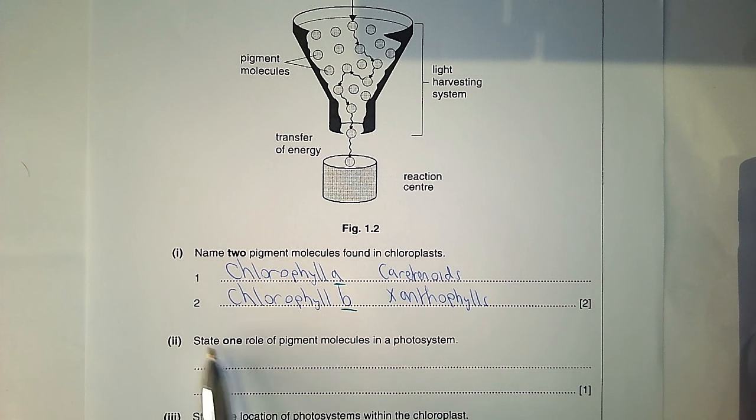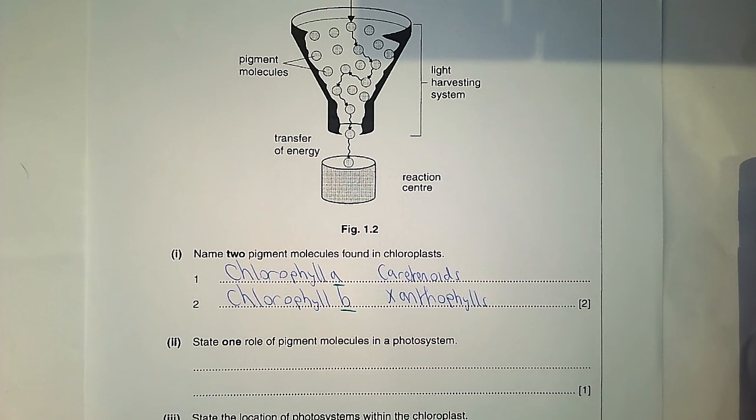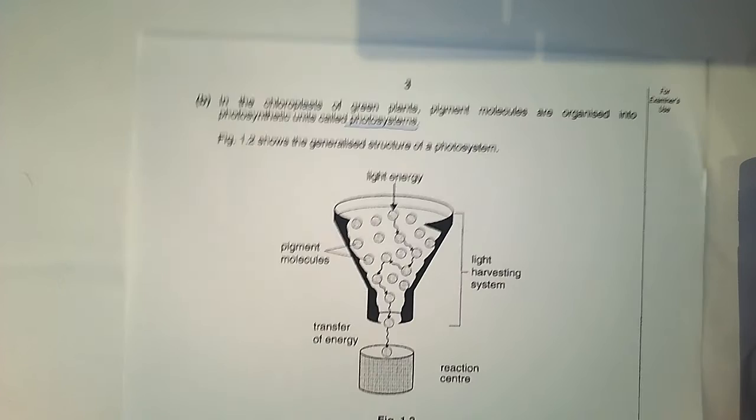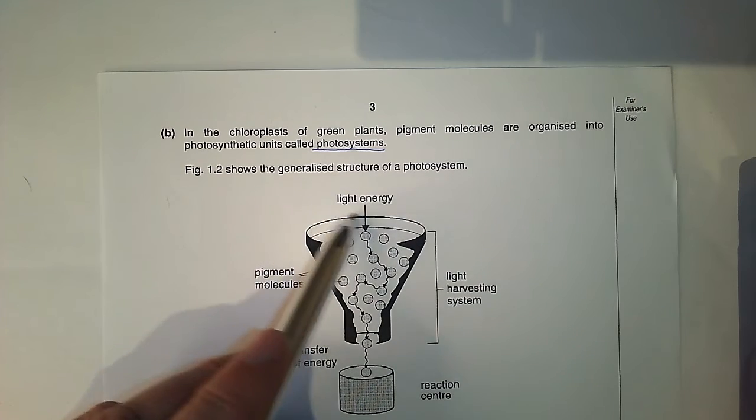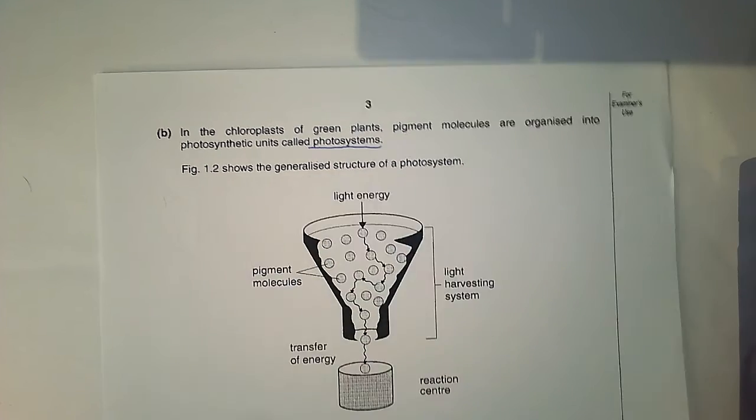Next part says state one role of pigment molecules in the photosystem. Well, you can see from the diagram that they're transferring energy, and the energy is starting off as light energy.